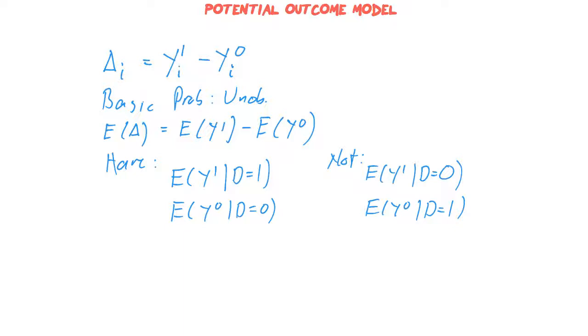So this would be the value of, say, if you take a person who actually got education, what would their salary have been if they had not received education? We don't know that. So we have these two pieces of information. That's something we have. We do not have this.